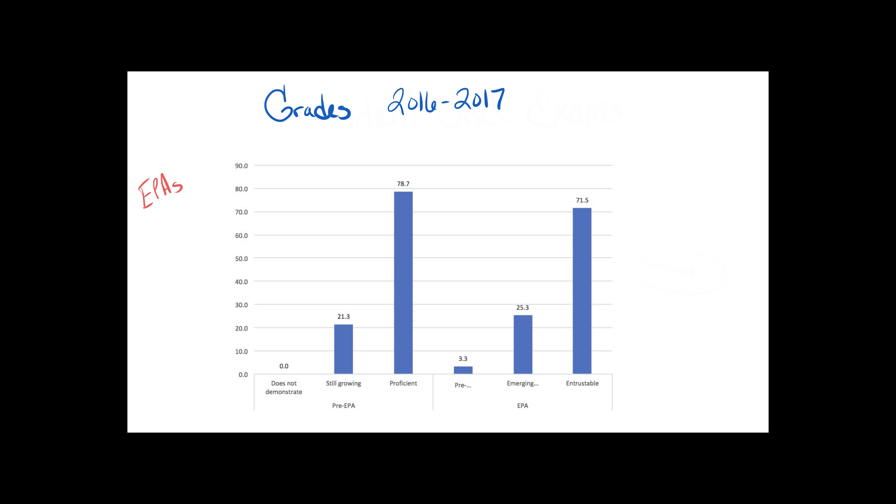But when we transitioned to EPAs, still with a three-point scale, looking at entrustable, emerging, or pre-entrustable, we found that pre-entrustable was actually used about 3% of the time, with the distribution of entrustable and emerging being similar to the pre-EPA era. I think this really just speaks to the utility of EPAs and the nomenclature used. To use the terminology pre-entrustable makes it more comfortable for a faculty member to put the student in that category. I think also, importantly, you see that the large majority of our students do quite well on these examinations, even though they are a little bit atypical for them, and in some instances, uncomfortable for them to take an oral style exam.